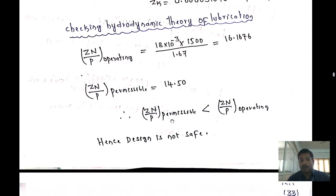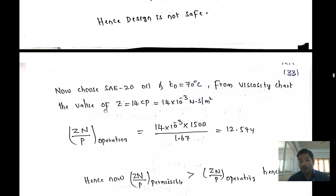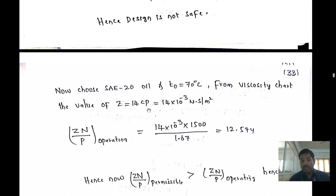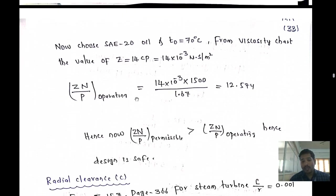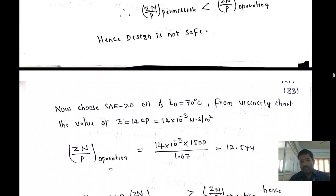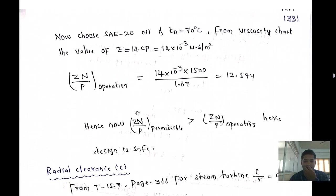Since the design is unsafe, we switch to SAE 20 oil. At an operating temperature of 70°C, from the viscosity chart, Z = 14 cp = 14 × 10⁻³ N·s/m². Recomputing: ZN/P_operating = (14 × 10⁻³ × 1500) / 1.67 = 12.574. Since 12.574 < 14.50 (permissible), the design is now safe.